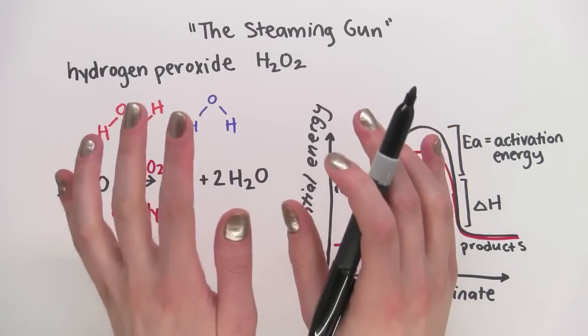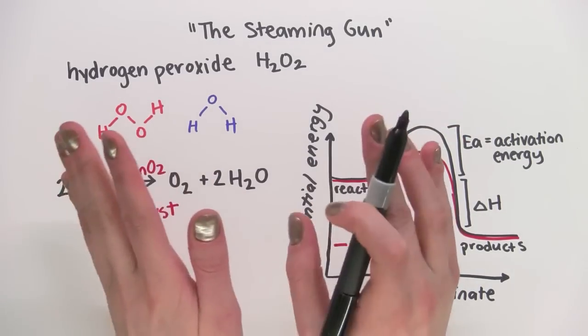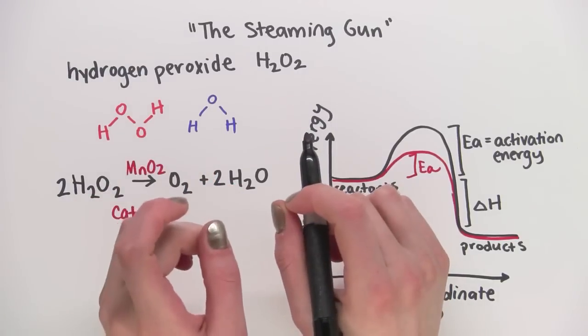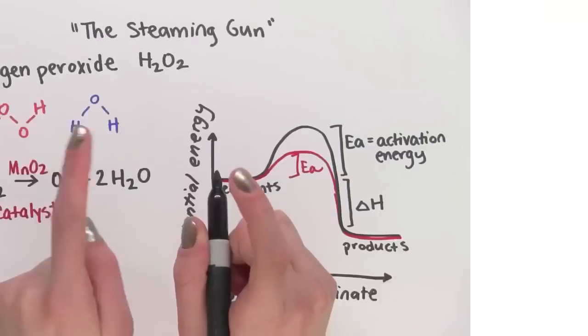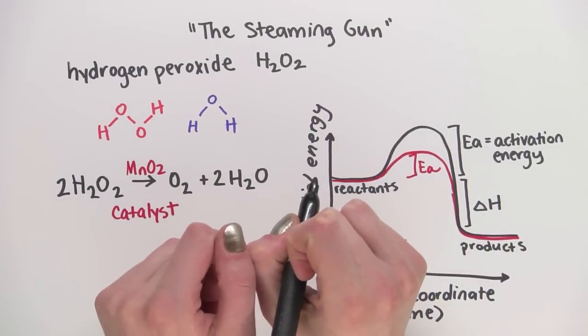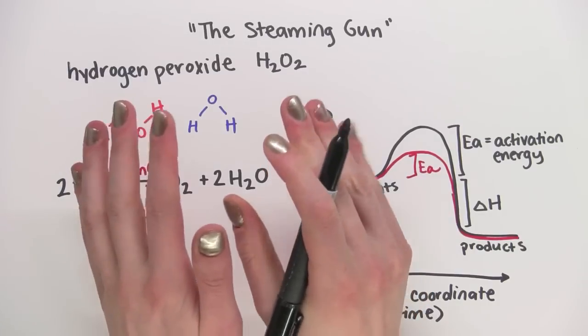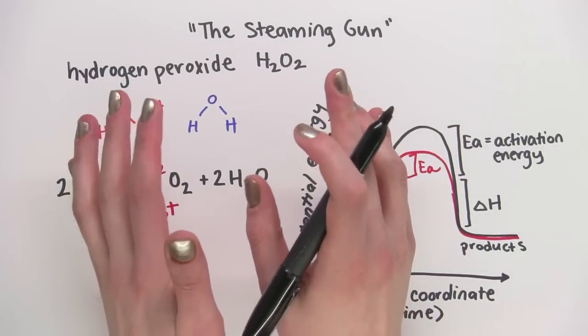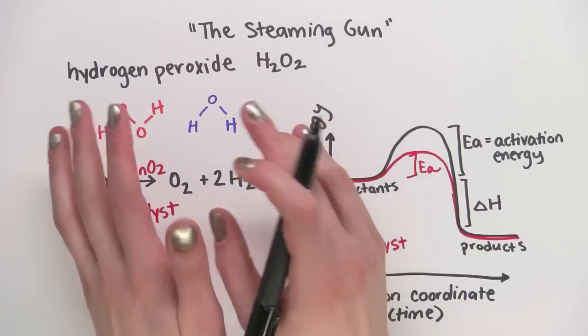Also, the catalyst itself remains unchanged by the reaction. And designing catalysts is actually a key subfield of chemistry. MIT's Richard Schrock won the Nobel Prize working in this field. And remember how we used H2O2 on our cuts? Well, we have an enzyme in our bodies called catalase that does the same thing as the manganese dioxide that Dr. Dolan used.